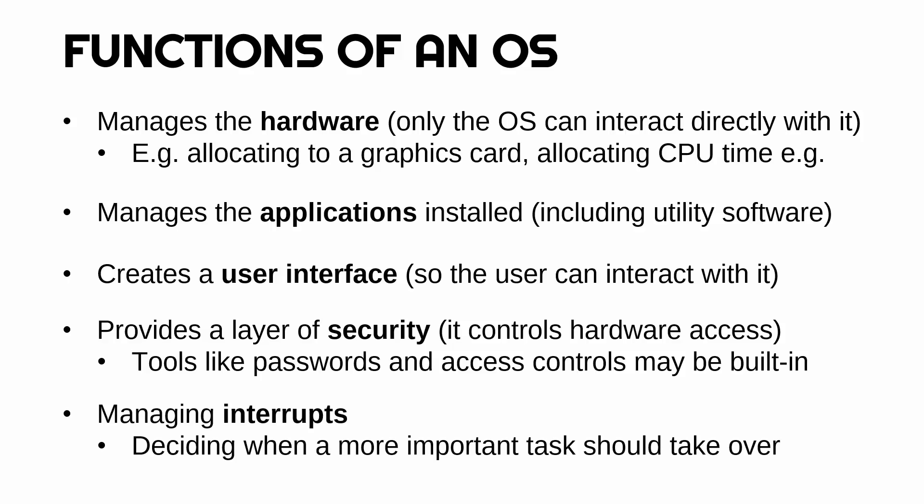A final, slightly more technical function you might see on mark schemes is that the OS manages interrupts. An interrupt is when something more important happens in the computer, and so the CPU has to stop what it's doing and do that more important thing instead. An example might be clicking or typing — that will interrupt the CPU because it's a more urgent action. Some interrupts are more important than others; for example, the power being pulled out is very important, while clicking is less so. The OS will decide what to interrupt the CPU with, doing some prioritising.